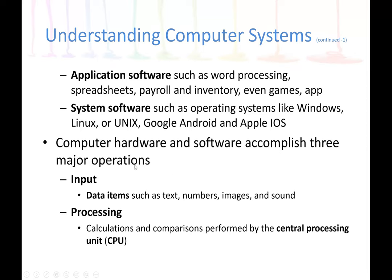Computer hardware and software accomplish three major operations. The first is input, where data items such as text, numbers, images, or sounds can be entered into the computer system. Then we have processing, where calculations and comparisons are performed by the central processing unit — the CPU — which is the brain of the computer.